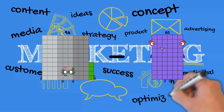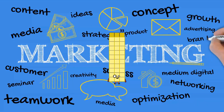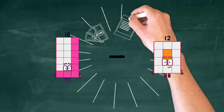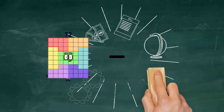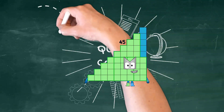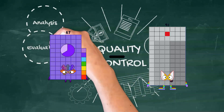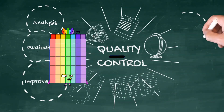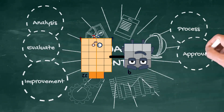94 minus 61 equals 33. 18 minus 12 equals 6. 72 minus 27 equals 45. 67 minus 20 equals 47. 22 minus 9 equals 13.